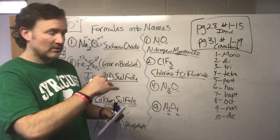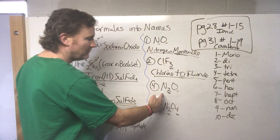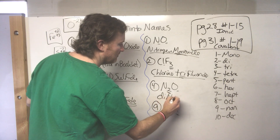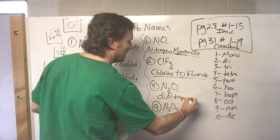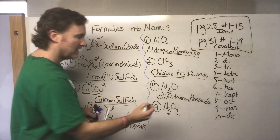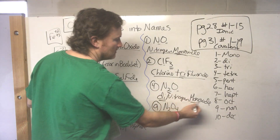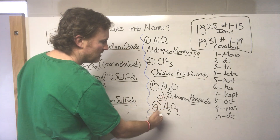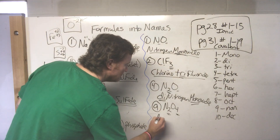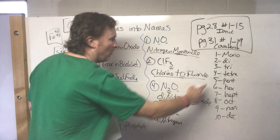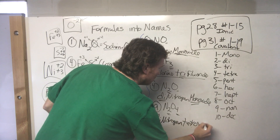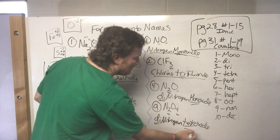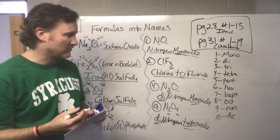For number four, N₂O: two nitrogens (di), one oxygen (mono) — dinitrogen monoxide. For the next one, N₂O₄: still dinitrogen, and four oxygens gives tetra, so tetroxide. Note that when the prefix ends in a vowel and the element name starts with a vowel, you typically drop one vowel — so it's tetroxide, not tetra oxide — though I'd still give credit for tetra oxide on a test.